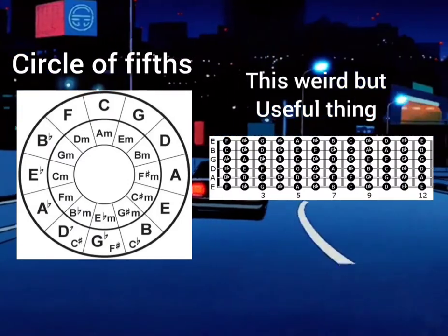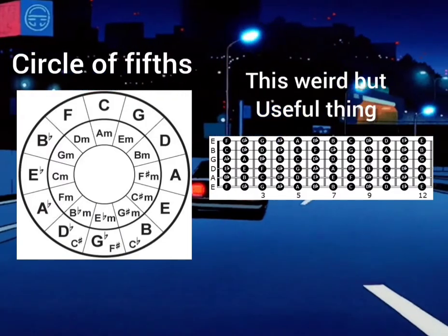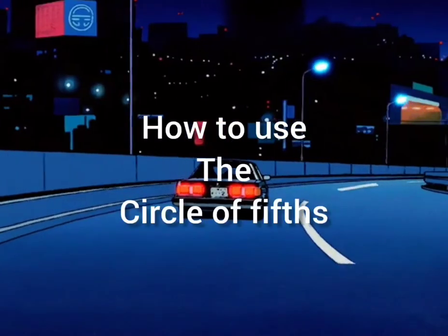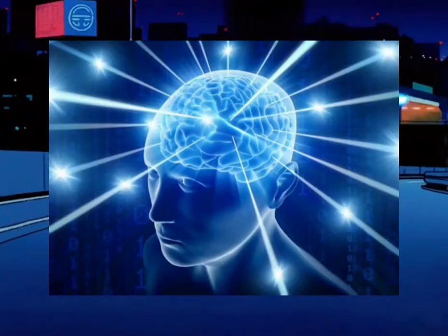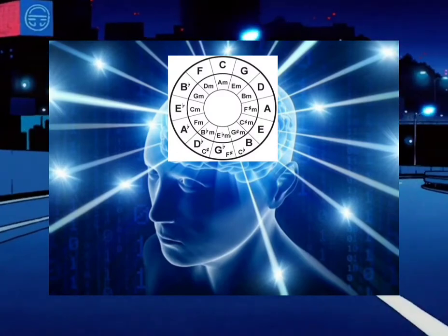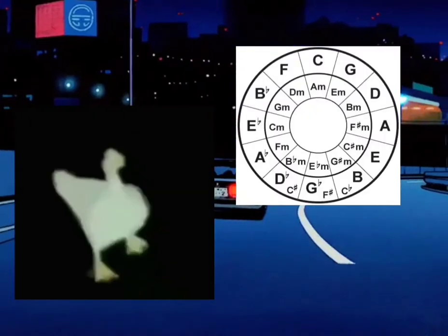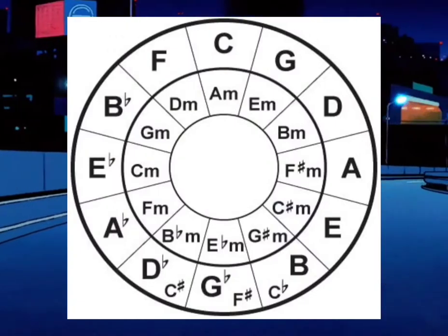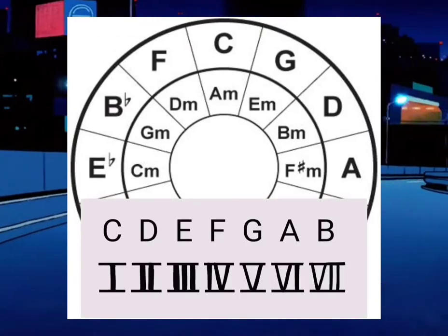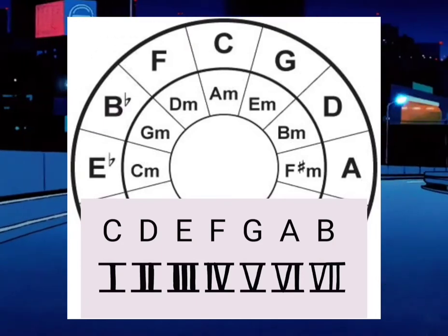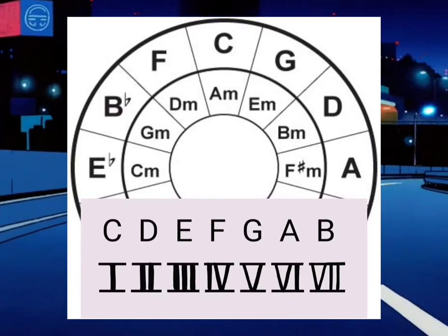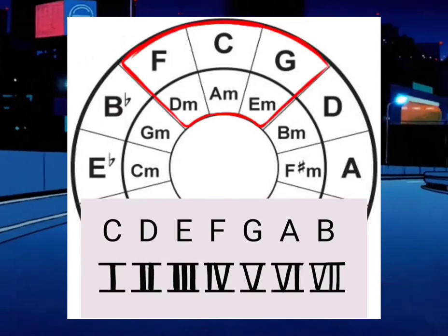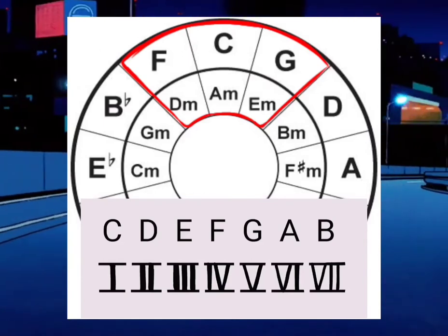The circle of fifths — I'll call it the circle of gifts — is a very useful tool that saves us the need to know all the scales by memory. We have the circle right here. If we take these six squares, we get the six degrees of the C major scale, and the seventh degree is from here. You can apply this to all notes.